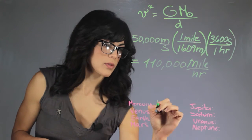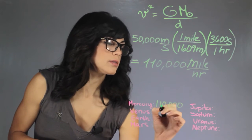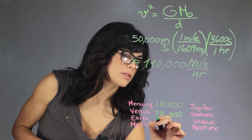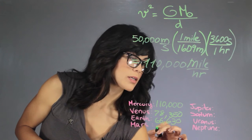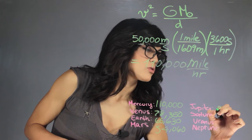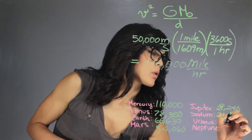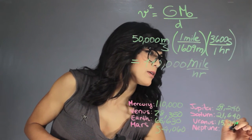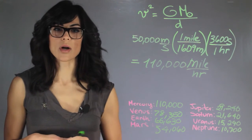And here is the rest of them. So this is 110,000 miles an hour. This one is 78,350. This one is 66,630. And for Mars is 54,060. Jupiter is 29,240. This one is 21,640. Uranus is 15,290. And Neptune is 10,700. And all of these are in miles per hour.